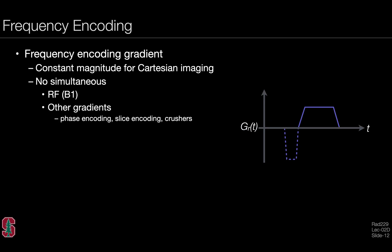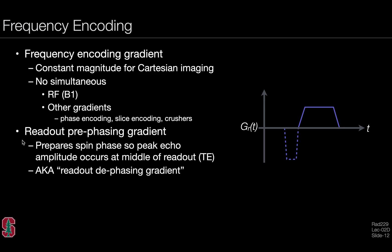Let's think about frequency encoding. Frequency encoding gradient consists of a constant magnitude gradient for Cartesian imaging. And it would not include any simultaneous RF events or other gradient events like phase encoding, slice encoding, or crushers. The readout pre-phasing gradient comes just before the actual readout gradient itself. And it helps prepare the spin phase so that it has a peak echo amplitude that occurs near the middle of the readout, which we refer to as the echo time. This is also known as the readout dephasing gradient.